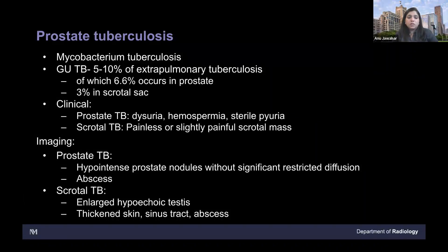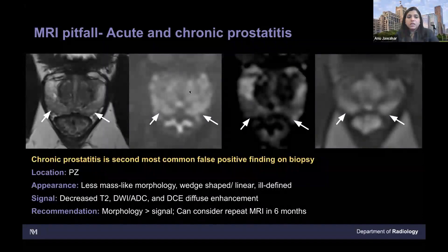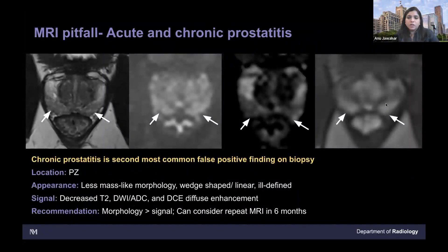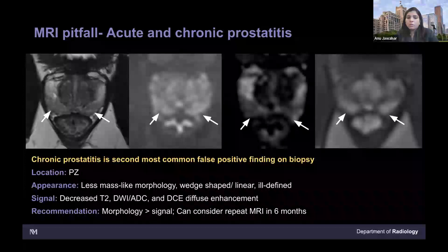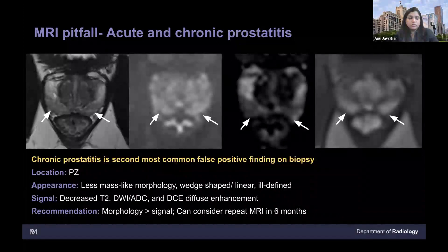Scrotal TB — depending on what organ is involved, if it's the testis, they can have an enlarged hypoechoic testis or an epididymo-orchitis appearance. They can have thickened skin, sinus tract, or abscesses. Differentiating prostatitis from prostate cancer: on T2-weighted image you see diffuse, wedge-shaped hypointensity and not much restricted diffusion. Chronic prostatitis shows uniform enhancement along with the rest of the peripheral gland. Chronic prostatitis is the second most common false positive finding on biopsy — we commonly call it a lesion though there's not much ADC or restricted diffusion, and biopsy comes back as benign or inflammatory cells.